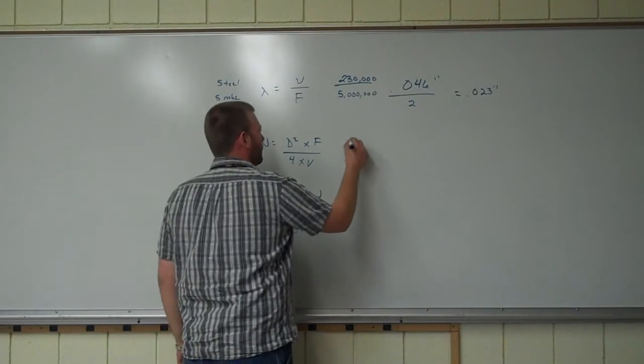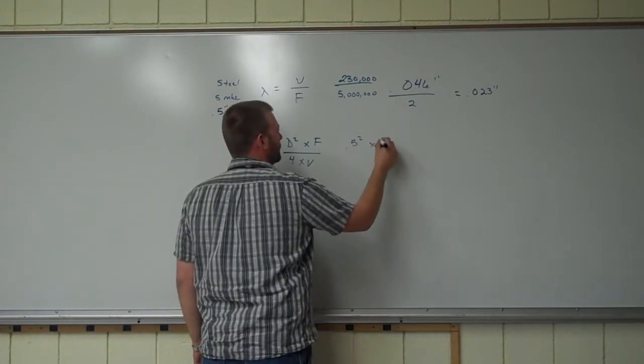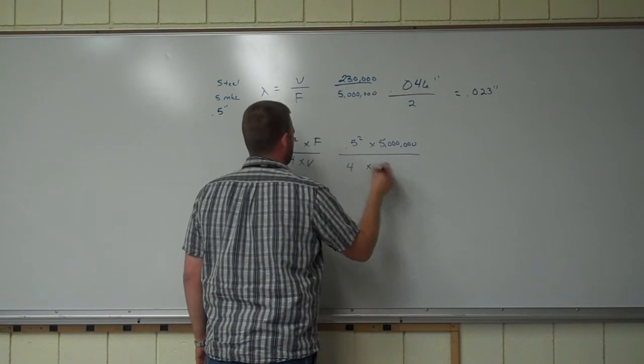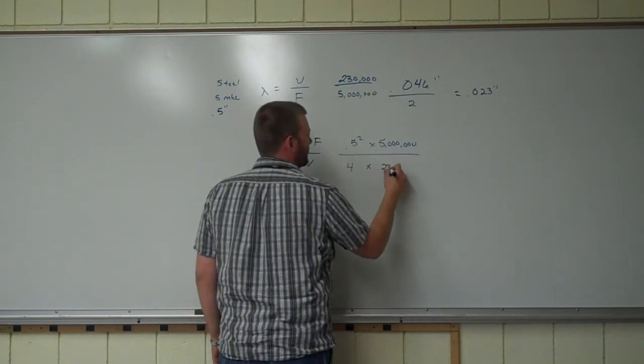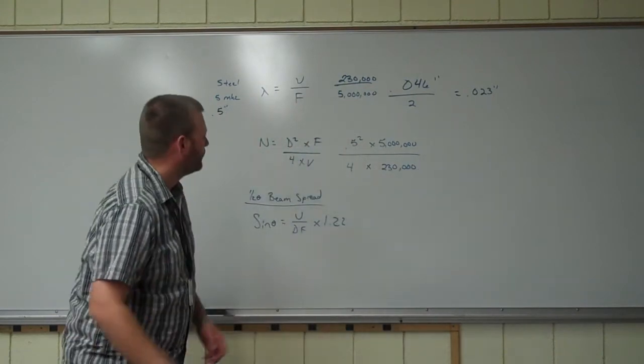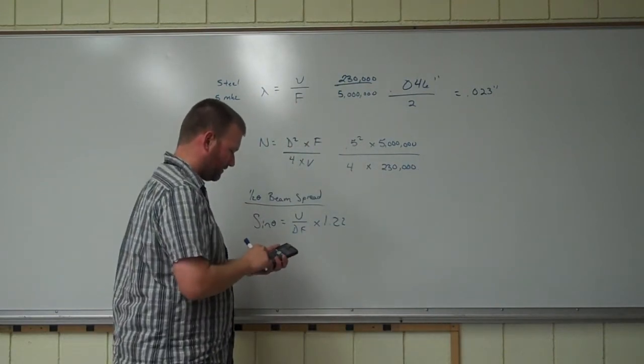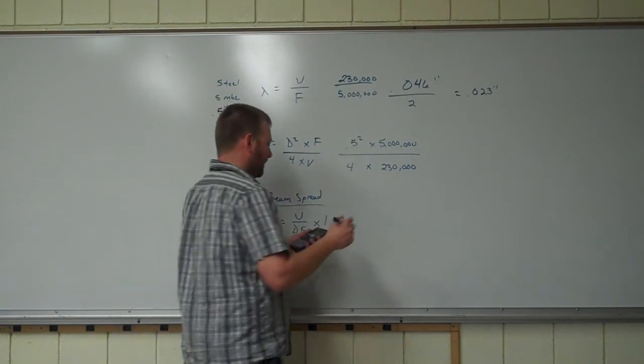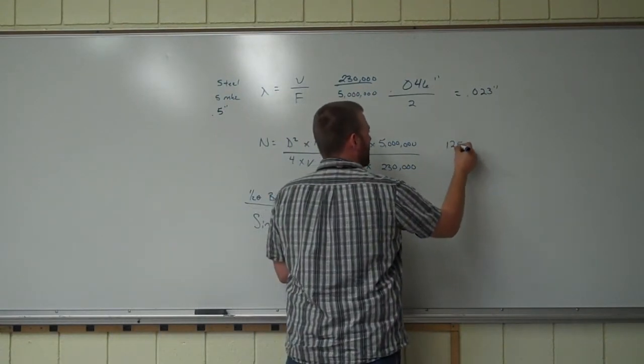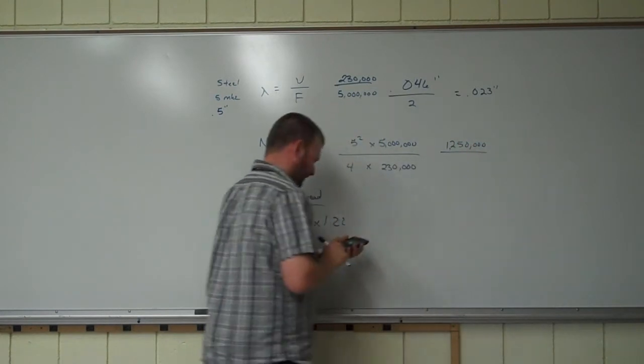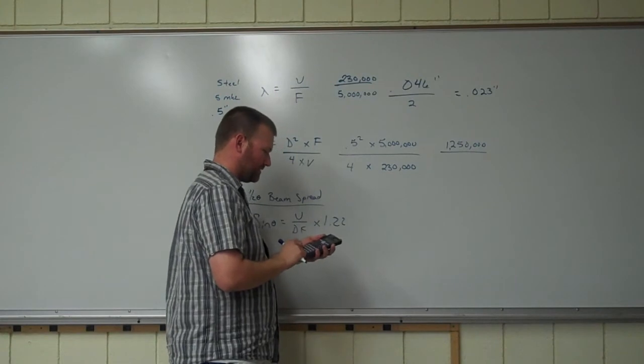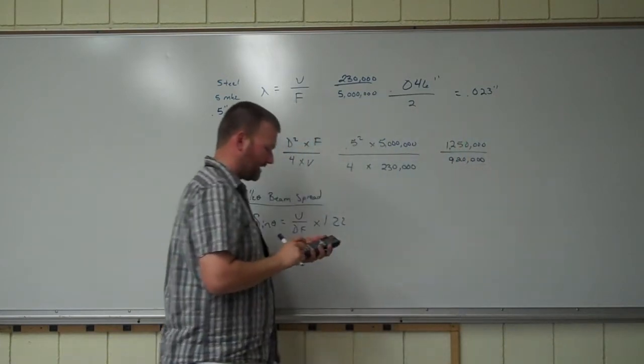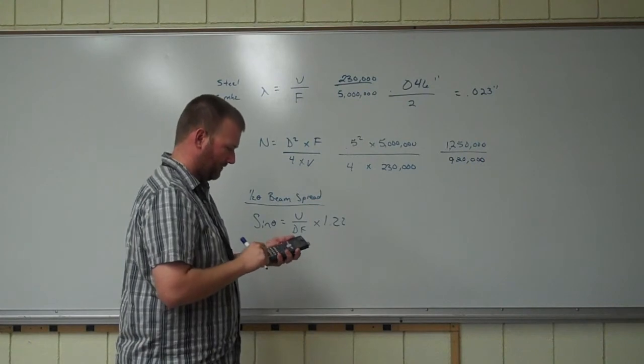So 0.5 squared times frequency over 4 times velocity. That same velocity, 230,000. And I'll just work this out a couple ways here. 0.5 squared times 5,000,000 equals 1,250,000. And that's going to be over 4 times 230. That's 920,000.